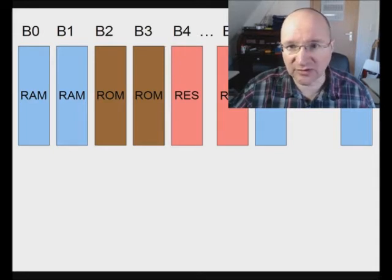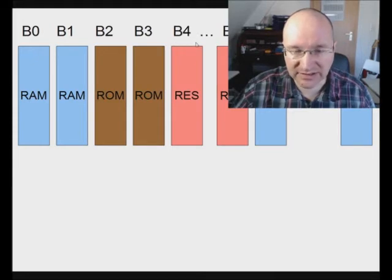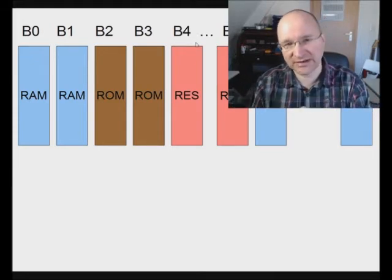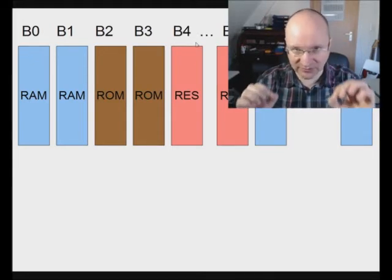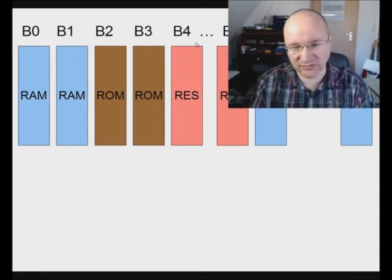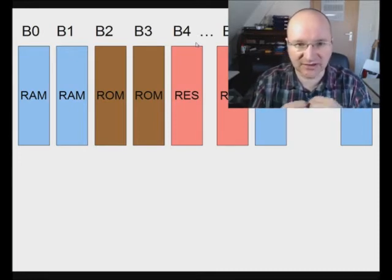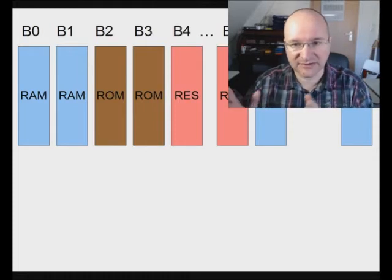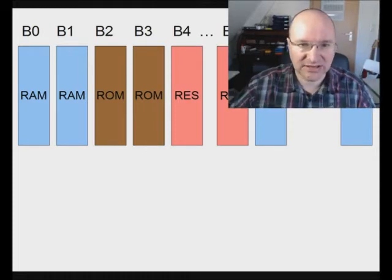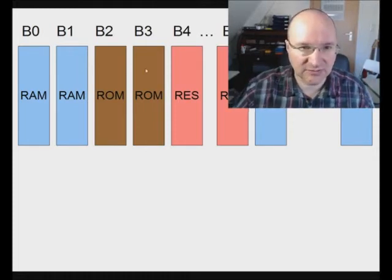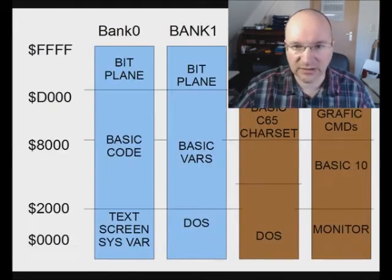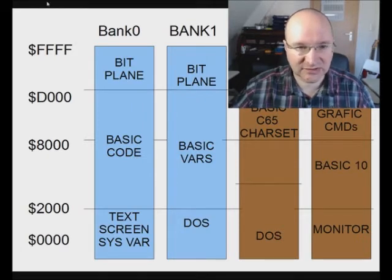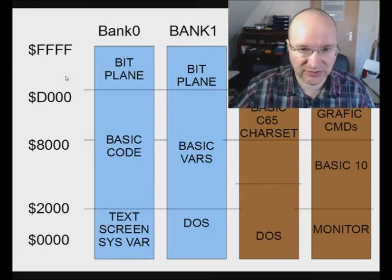In theory it continues with further banks, but those are only available if you have extended memory. If you want to write software for an original Commodore 65 and ensure it runs on every machine regardless of memory expansion, you should stick to those four banks.